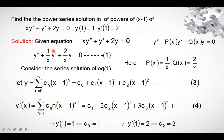Now let's look at a problem: Find the power series solution in powers of (x − 1) of x·y'' + y' + 2y = 0, given initial conditions y(1) = 1 and y'(1) = 2.